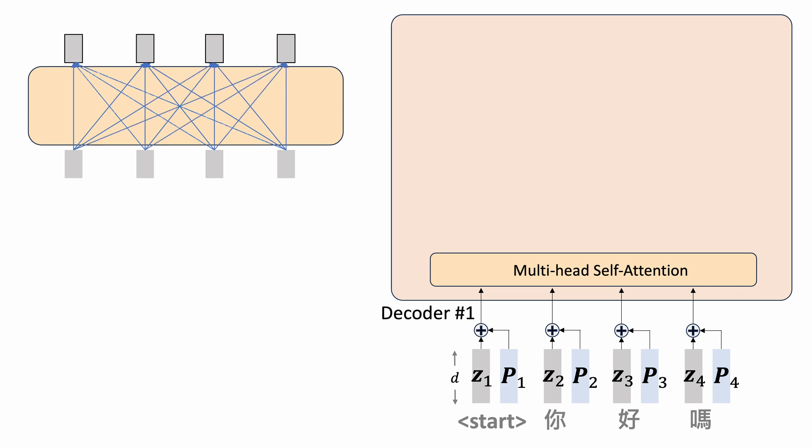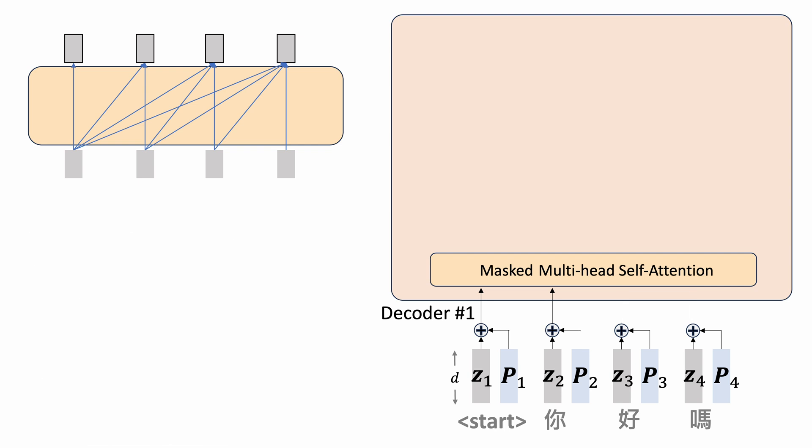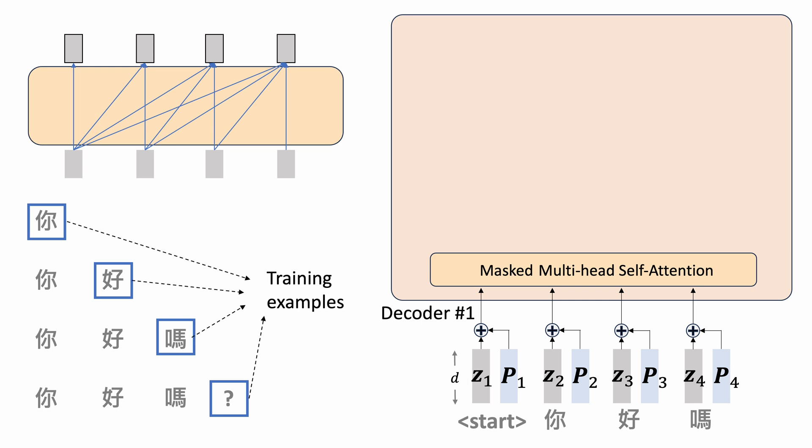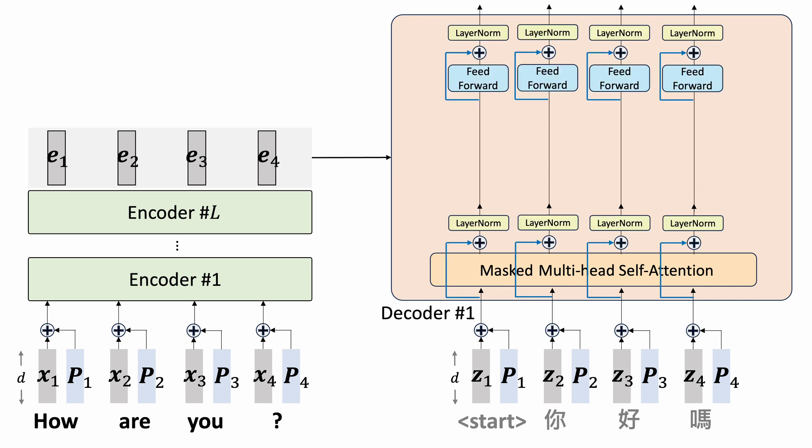But because we generate the output tokens auto-regressively, we need to restrict the model from attending to future positions. We call this masked attention and can implement it by adding a mask where the lower triangle has negative infinite values. This ensures that after the softmax function, these entries become zeros. Another bonus of masked attention is that we can create multiple training examples for a single target sequence. Like the encoder, we also have a residual connection, normalization, and a position-wise feed-forward network. The main difference is that we need to pass down the information from the encoder to the decoder.